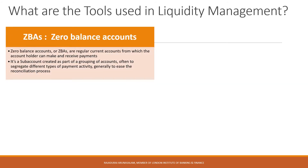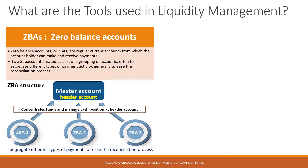Another tool is called Zero Balance Accounts, or ZBAs — regular current accounts from which the account holder can make and receive payments. However, funds are not held in the accounts overnight. At the end of the processing day, the balance in zero balance accounts, whether positive or negative, in credit or overdrawn, is automatically moved to another account owned by the account holder. Funds are physically moved by the bank between the zero balance account and another account, which is usually the customer's main account, often referred to as a header account. The account holder does not need to intervene to make this process happen.